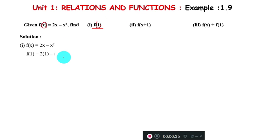f(1) = 2(1) - 1² = 2 - 1 = 1. So the answer for f(1) is 1. Now for f(x+1).